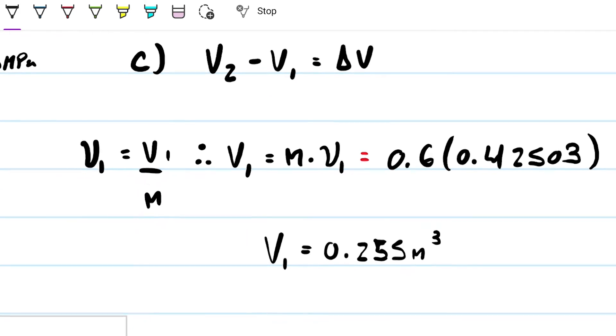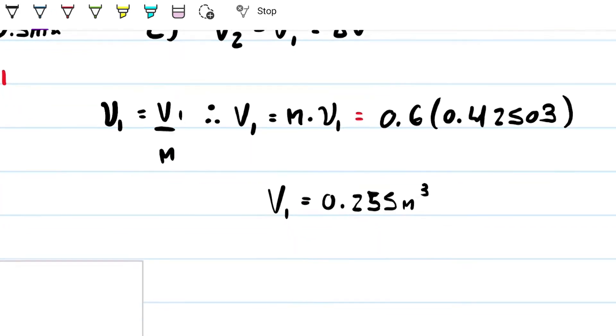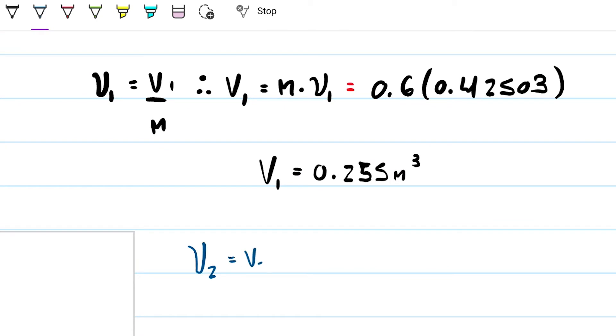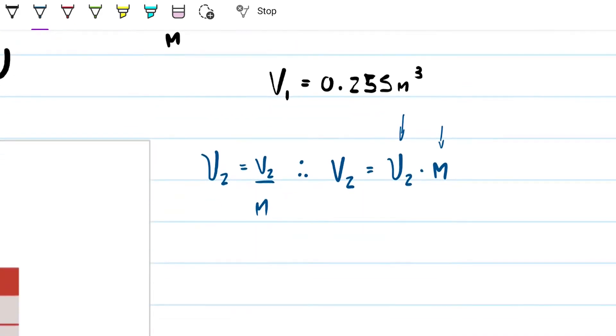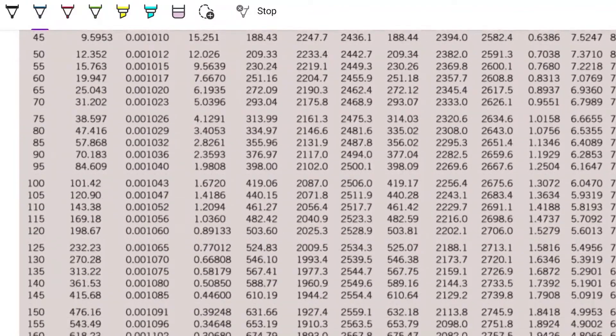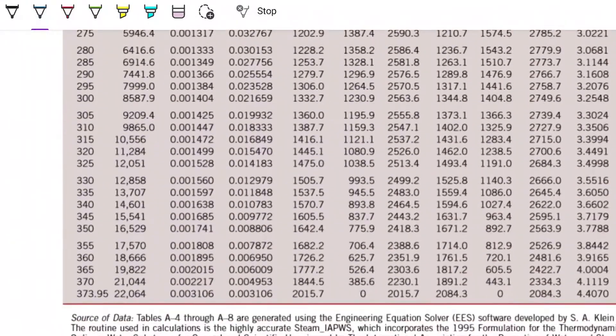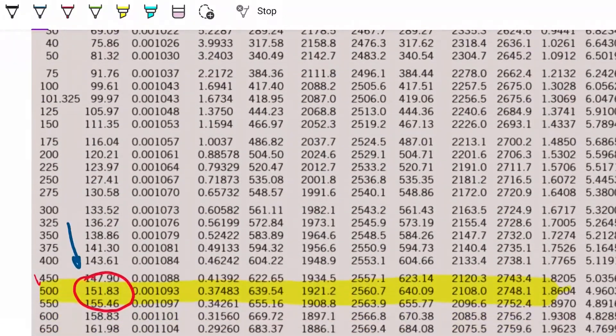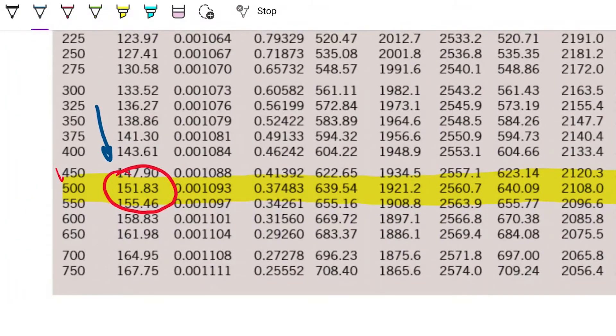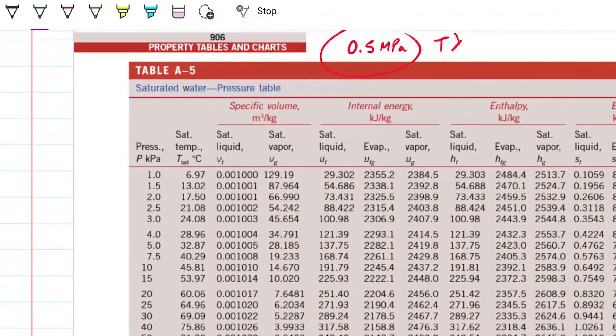Now that we have that, all we need to do is find V2 now. And we're going to do V2 exactly the same way. Looking at the definition of specific volume, the mass is the same. No single mass has left our system. So therefore my volume 2 is just going to be my specific volume 2 times the mass. Again, the mass 0.6, we know. Specific volume 2, we need to calculate. How do we do that? Well, we go back to our temperature table.